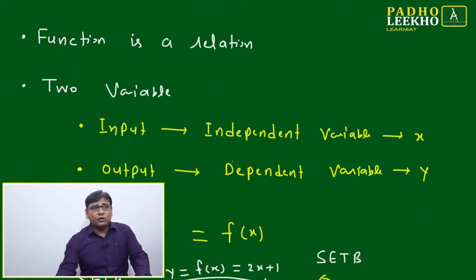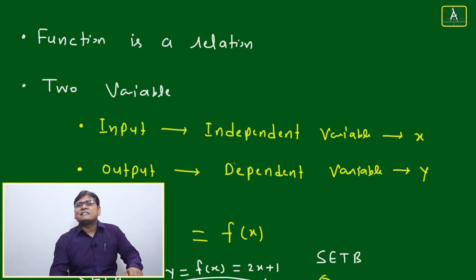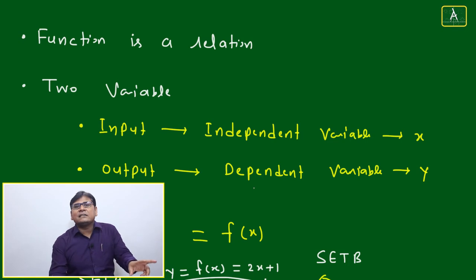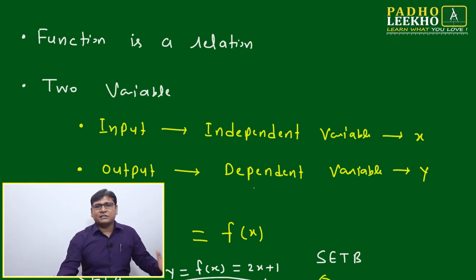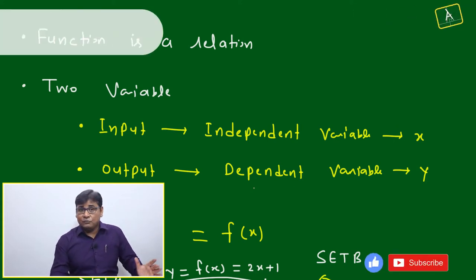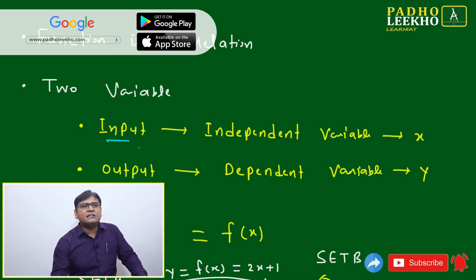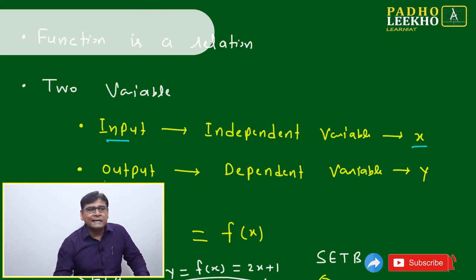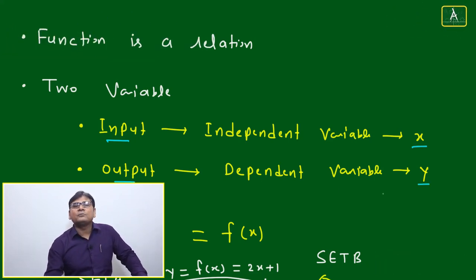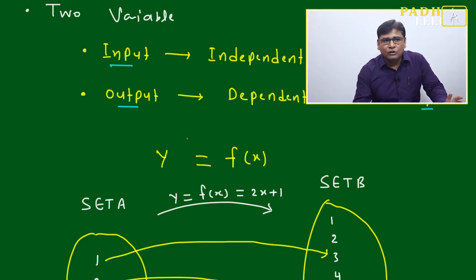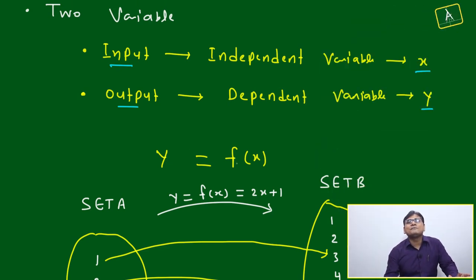As I told already, a function is a relation — all functions must be a relation, but not all relations are necessarily functions. If a relation satisfies a certain condition it will be a function; if that condition is not satisfied, that relation is not a function. Two variables are there: input or independent variable denoted by x, and output or dependent variable denoted by y.